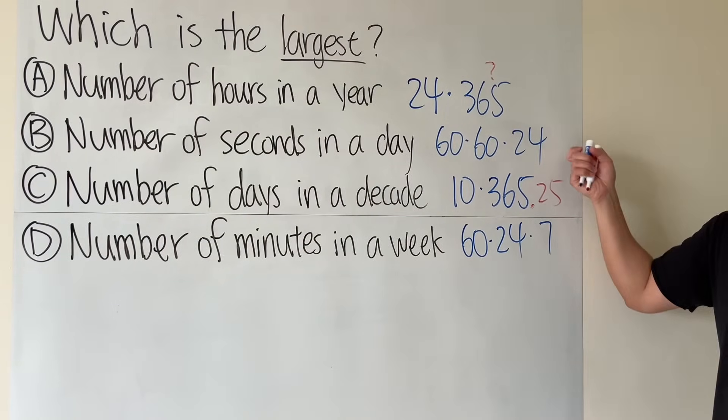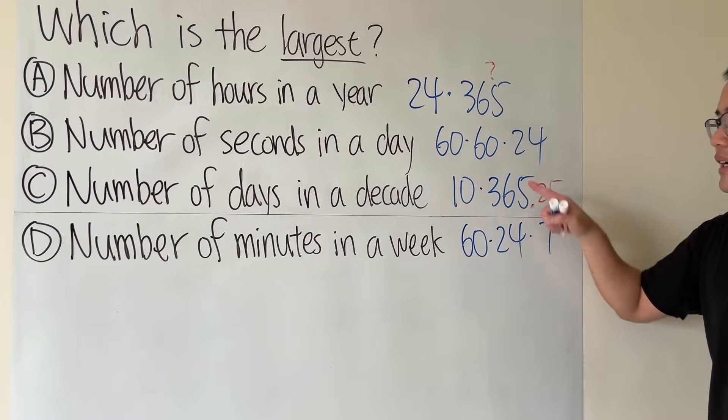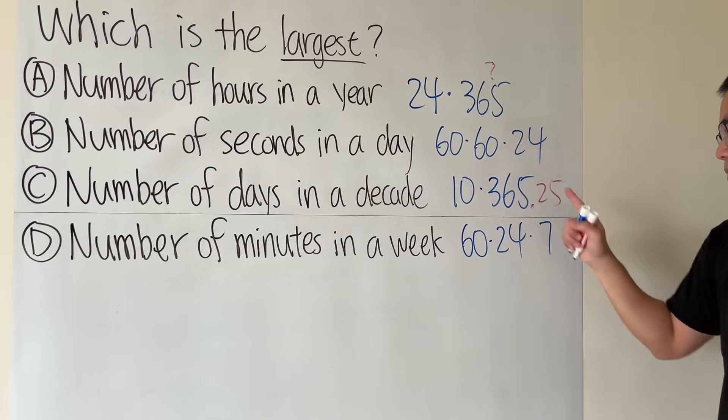And now we just have to compare B and D. 60-60 match, 24 and 24 match, so you see 60 is bigger than 7.